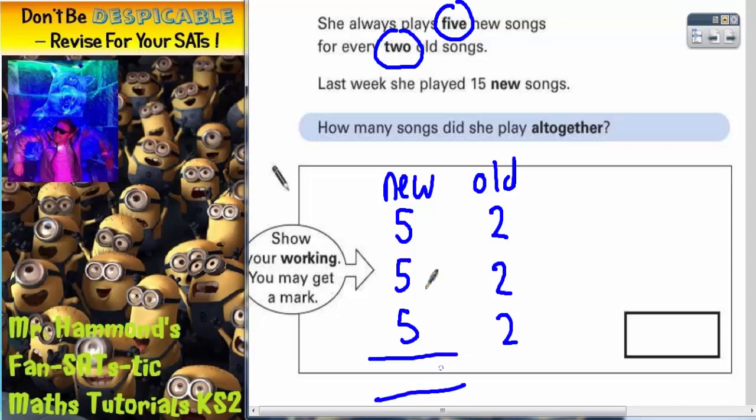So altogether the new songs she's played fifteen which is what we get told here so that information works, and the old songs she's played six. So altogether she's played fifteen plus six which is twenty-one songs. So the final answer is twenty-one songs.